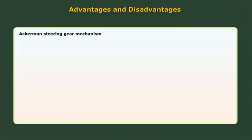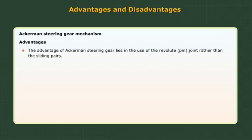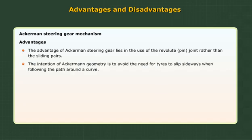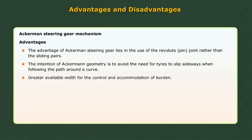Ackerman steering gear mechanism — advantages and disadvantages. The advantage of Ackerman steering gear lies in the use of the revolute pin joint rather than the sliding pairs. The intention of Ackerman geometry is to avoid the need for tires to slip sideways when following the path around a curve. It also provides greater available width for the control and accommodation of burden.